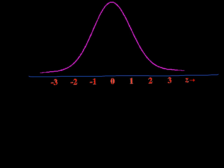By now you've read about the standard normal curve and you've read some examples of when that's used. You should also know by now that these numbers on the bottom are the z-scores — they tell you how many standard deviations away from the mean. Zero, of course, would mean you are right at the mean.